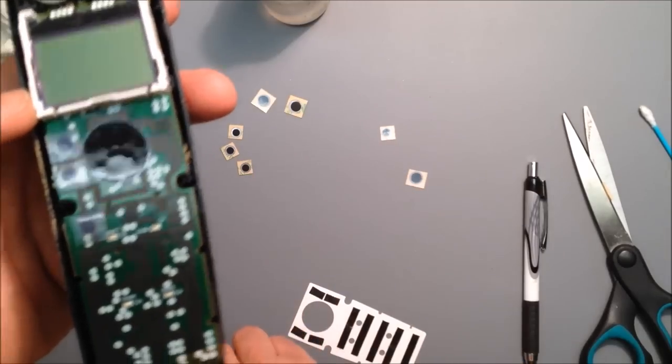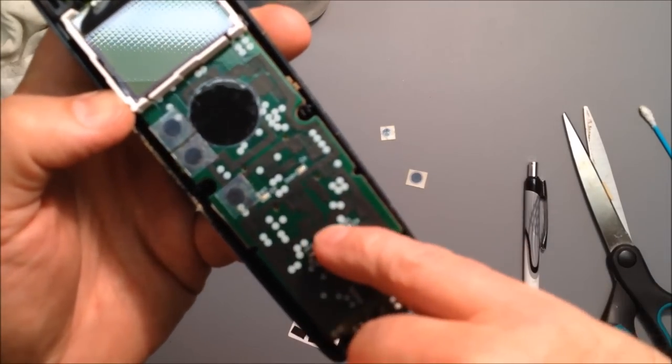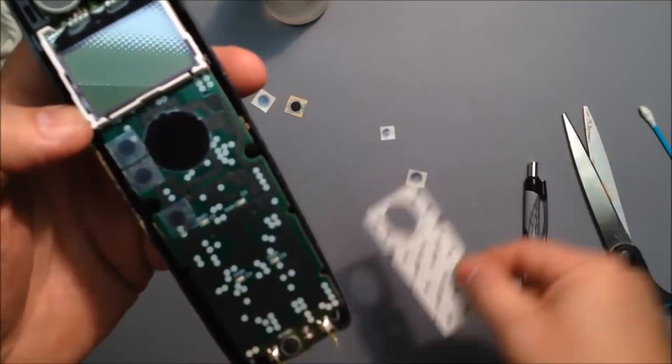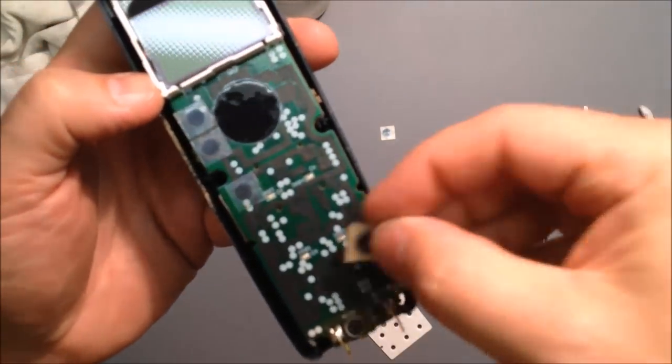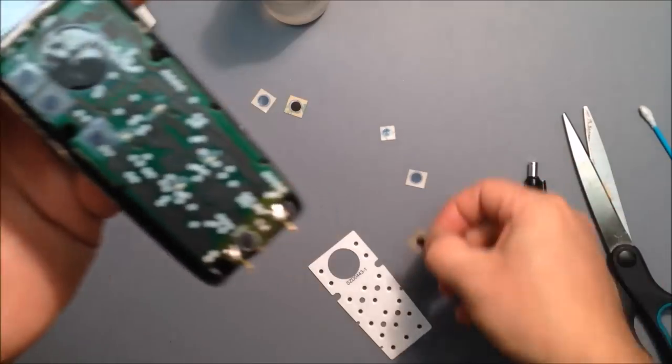So when you put this button on there, it's kind of hard to tell where the buttons are. They're square contacts for a round button. You can get it right there. That's the big one.